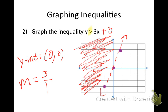Whenever it's a whole number, we always write it over 1 when talking about slope. For the shading: it's greater than, so I went above the line. Less than or less than or equal to — shade below. Greater than or greater than or equal to — shade above. It's all about what that inequality symbol is.